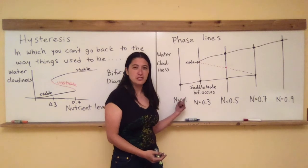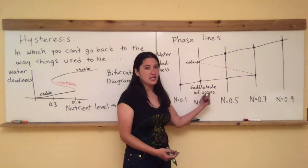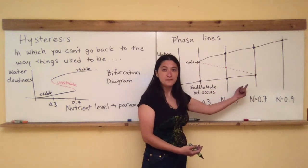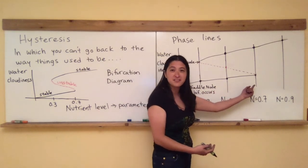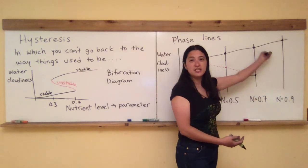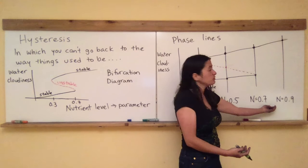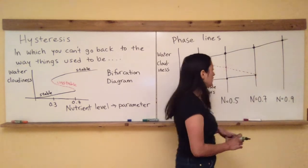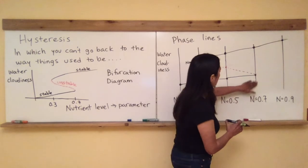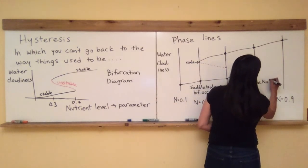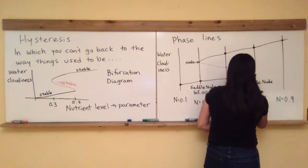I've been increasing my nutrient level this whole time and nothing out of the blue, nothing noticeable has been happening to me. And then all of a sudden I just increase it just a little bit more. And now my lake is ruined. Now I'm up here. Let's say my nutrient level is 0.8 or 0.9. You just have the muckiest water ever. And that's the point at which another saddle node bifurcation occurred. Saddle node bifurcation occurs again. Another one right here.